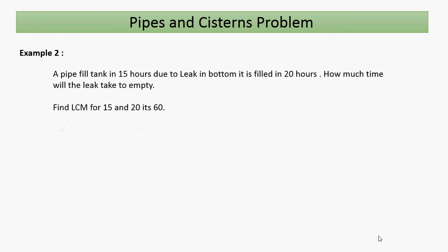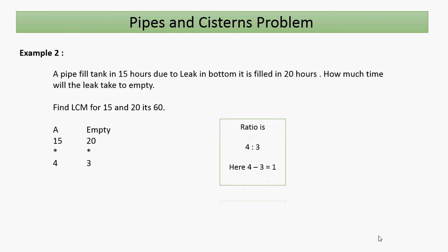Find the LCM of 50 and 20, which is 60. For A (filling): 50 × 4 would be incorrect — actually the fill rate ratio is 4, and the combined (leaking) pipe ratio is 3, since 20 × 3 = 60. The filling ratio is 4 and the emptying ratio is 3. So net = 4 − 3 = 1. Total time = 60 ÷ 1 = 60 hours. The leak takes 60 hours to empty the tank.